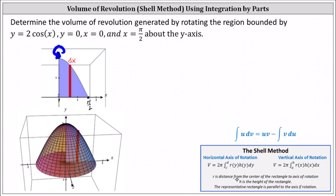Here r is the distance from the center of the rectangle to the axis of rotation, and h is the height of the rectangle. Going back to our diagram, this horizontal distance is r, which is simply x, and therefore r of x equals x. This vertical distance is h of x, which is the distance from the x-axis to the function value given by y equals 2 cosine x, indicating h of x is simply 2 cosine x. The interval of integration will be from zero to pi divided by two.